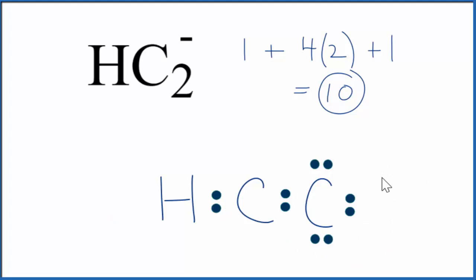So carbon has eight. It's good, but this carbon only has four. So what we can do is share electrons from this carbon here. If we put two here in the middle, we form this double bond.